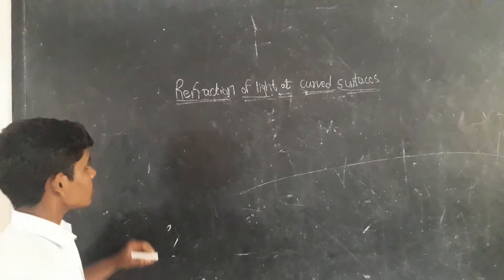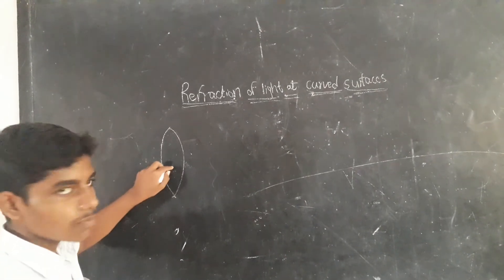Now, types of lens. This is biconvex lens. This is biconcave lens.